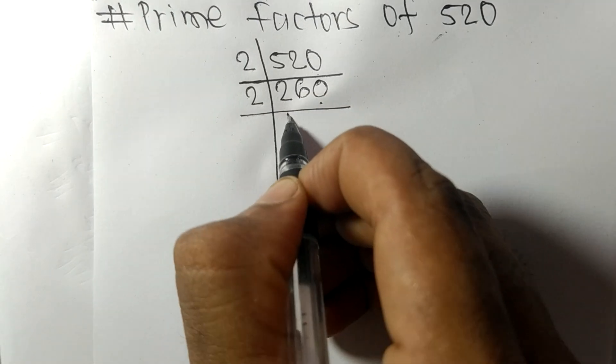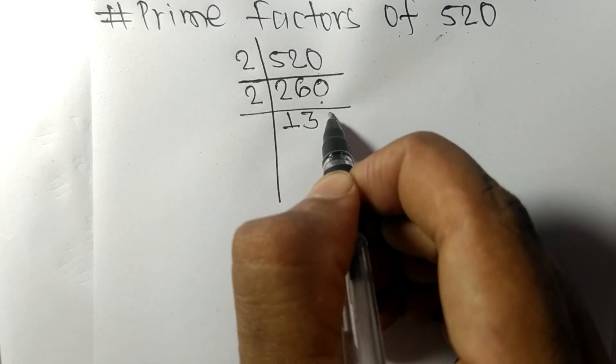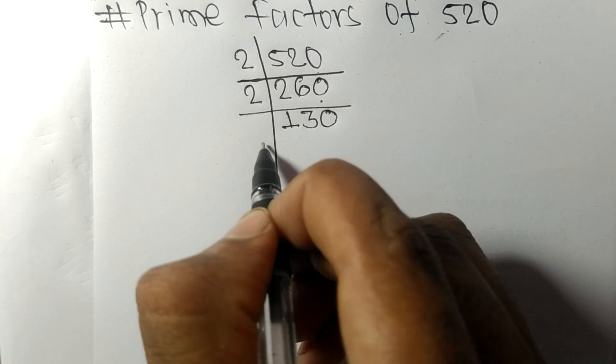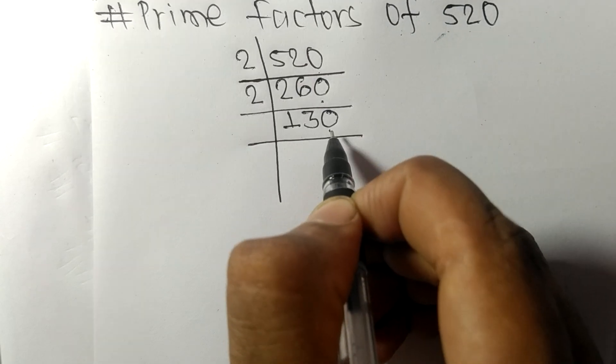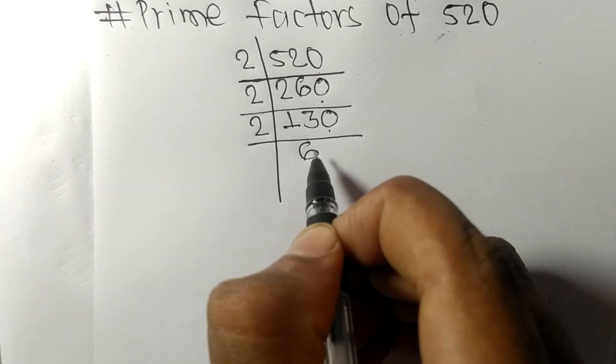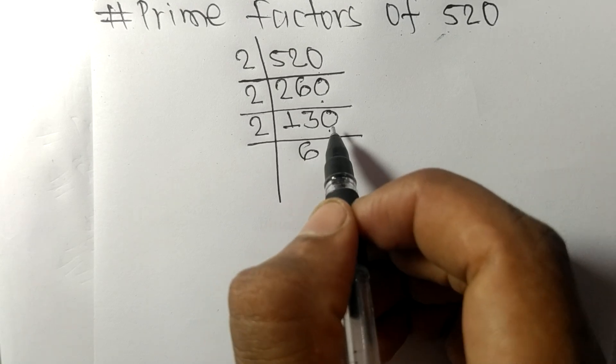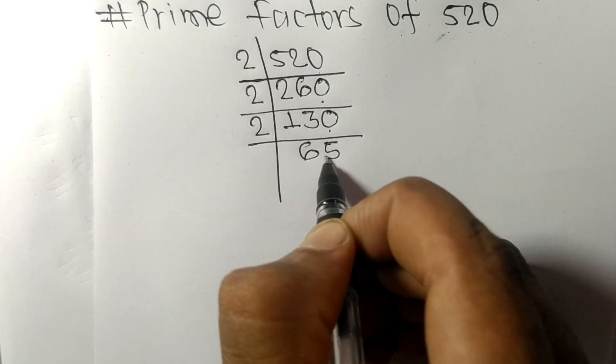Again zero at last so divisible by 2. 2 times 6 means 12, remainder 1. 1, 0, 10. 2 times 5 means 10.